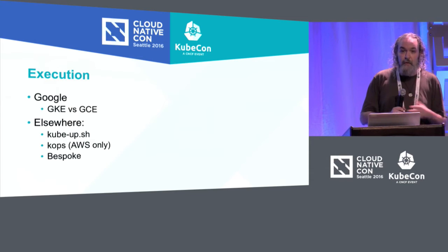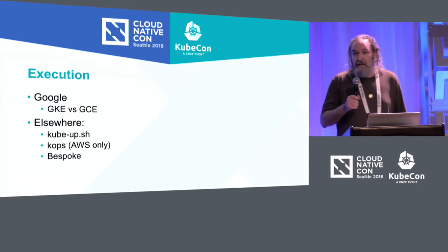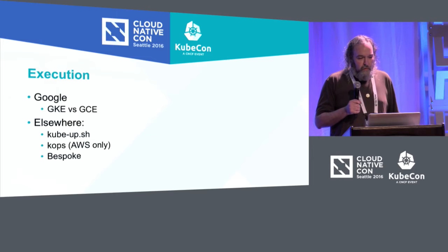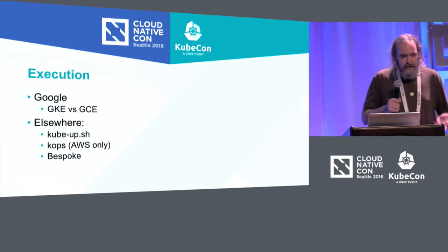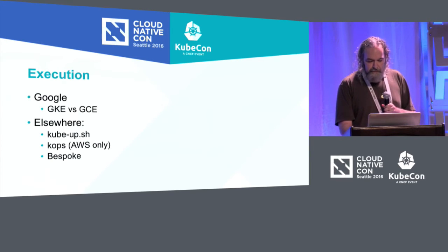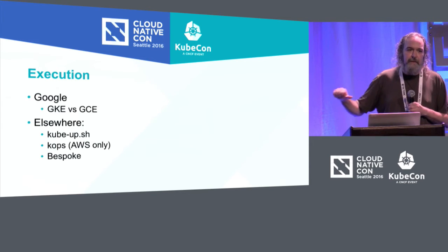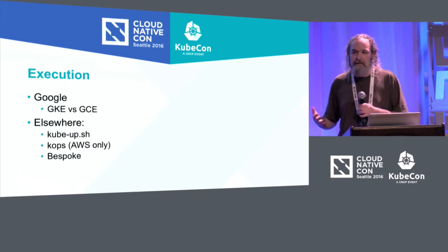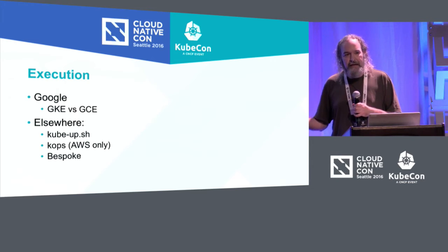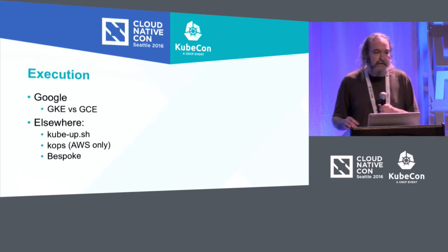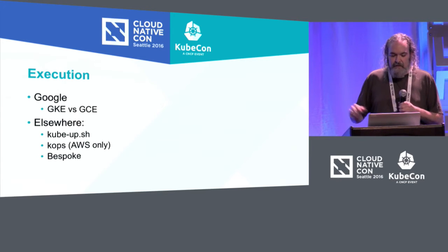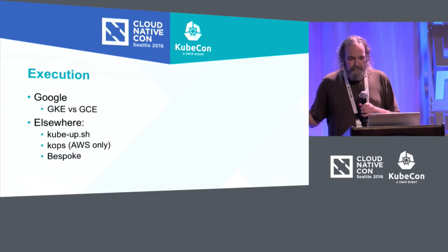KOPS is a fantastic tool for operationalizing Kubernetes, but it was a little bit behind on what we needed, so we ended up building things our own way. The main reason for that was because we needed our VPC to be connected back to our corporate network. Currently, we can't set up the subnets and everything like that in AWS or GCE without some finagling. The trickiest part we had with that was setting up the DNS.